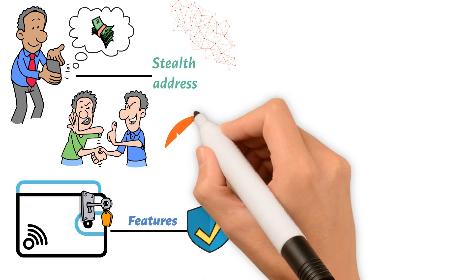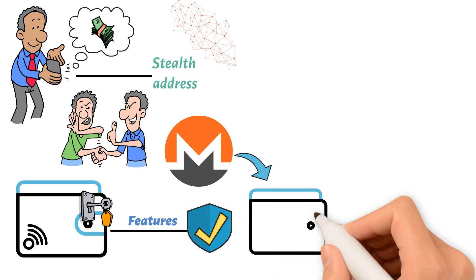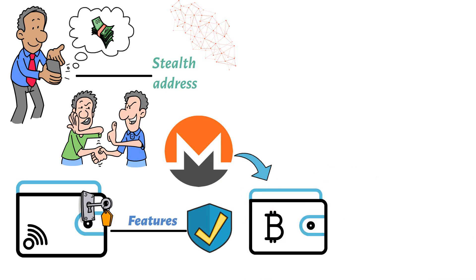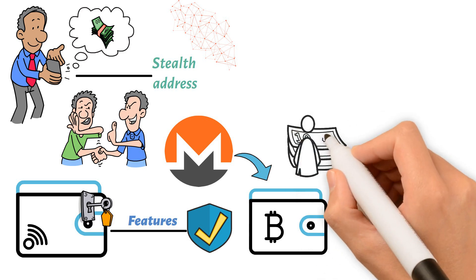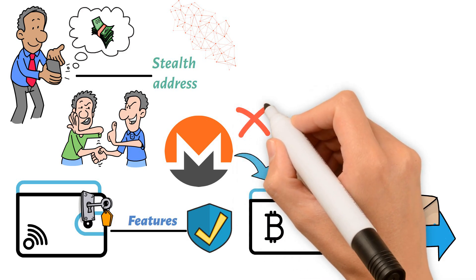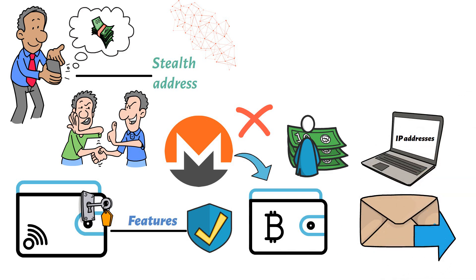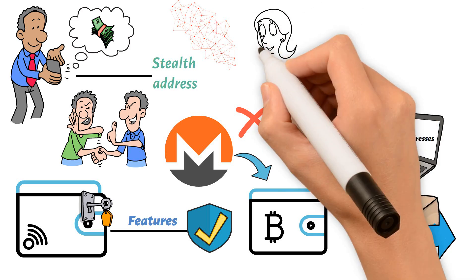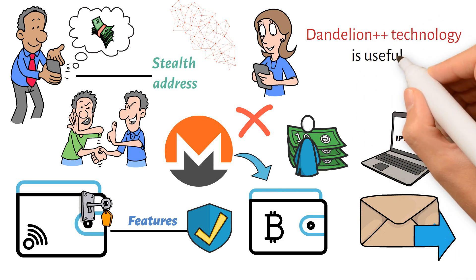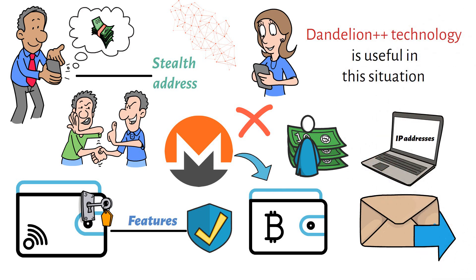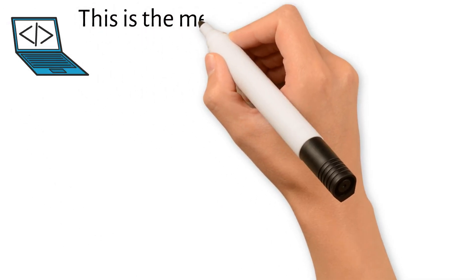The Monero network is the venue for the transaction. The network of nodes that process the transaction allows one to track the sender and recipient of the money, even if Monero does not reveal this information. These nodes have IP addresses that, if made public, might be used to trace transactions back to specific individuals. Dandelion++ technology is useful in this situation — it conceals the nodes' IP addresses by acting as a smokescreen.